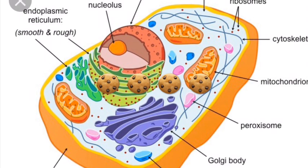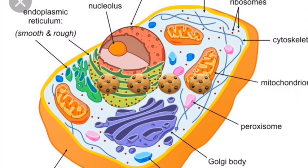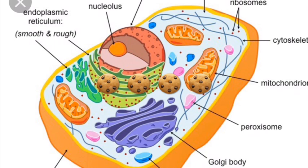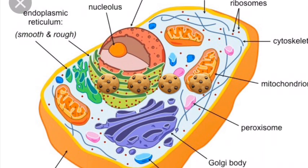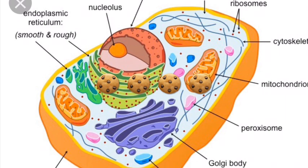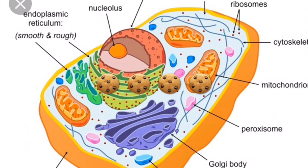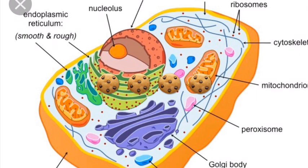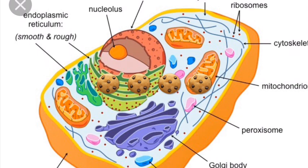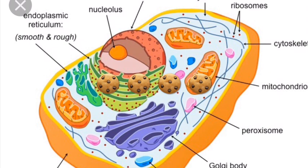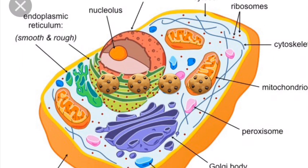The cell wall shapes, supports, and protects cells, but it's not in animal cells — only in plant cells. The cell membrane is in all cells: it controls materials entering and leaving the cell, is very flexible, and protects the cell.